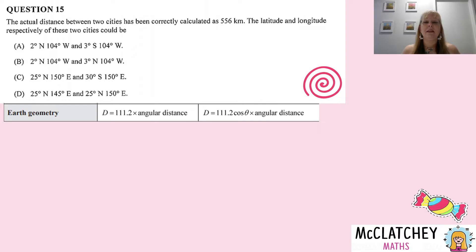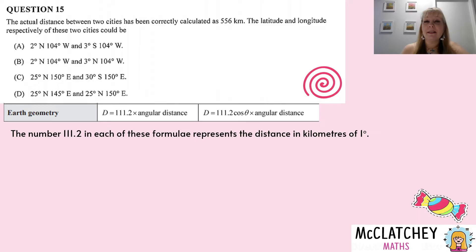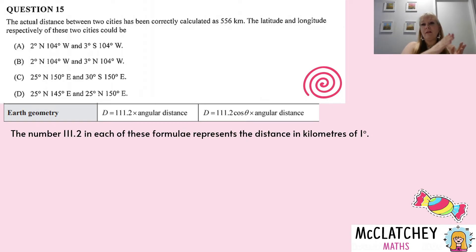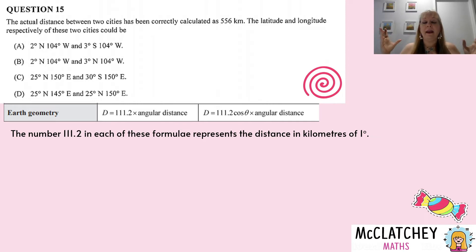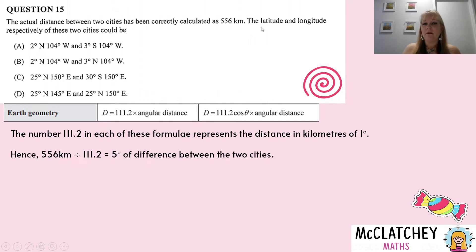There is a better way — actually understanding what your formula is all about. The 111.2 inside both formulas represents kilometers per one degree of movement across the Earth. The Earth is 360 degrees, and when we travel through one degree on a longitude line we're passing through 111.2 kilometers. That's why the longitude formula is simply 111.2 km times the number of degrees traveled. Since we know 556 kilometers were traveled, dividing by 111.2 gives us five degrees of difference between the two cities.